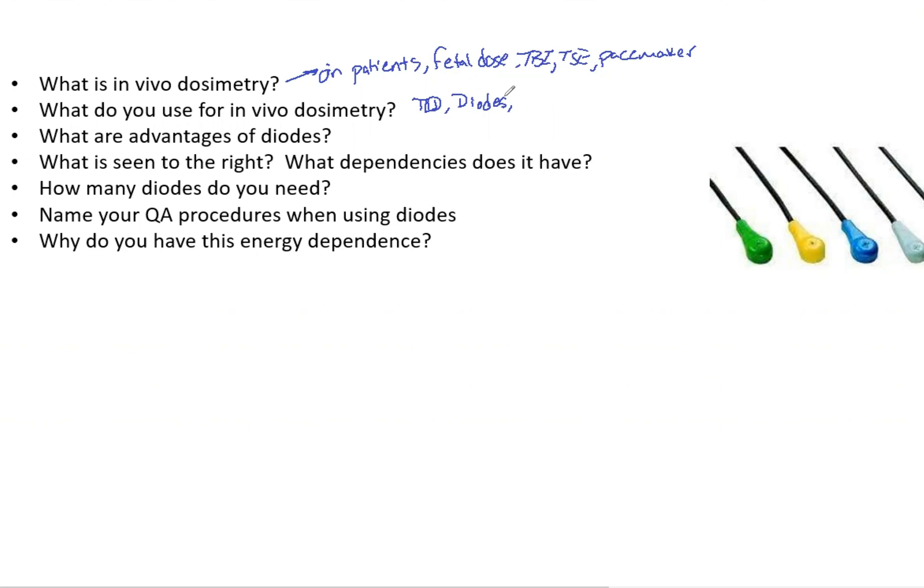So the advantages of diodes itself. The diodes' sensitivity is 18,000 times more sensitive than an ion chamber. So if you think about that, that's insane, because it only takes 3.5 eV per ion pair, which if you consider that to gas or air, that is 34 eV per ion pair. So it takes a lot less energy to create an ion pair in a diode than it does a gas chamber. That's why it's so much more sensitive.